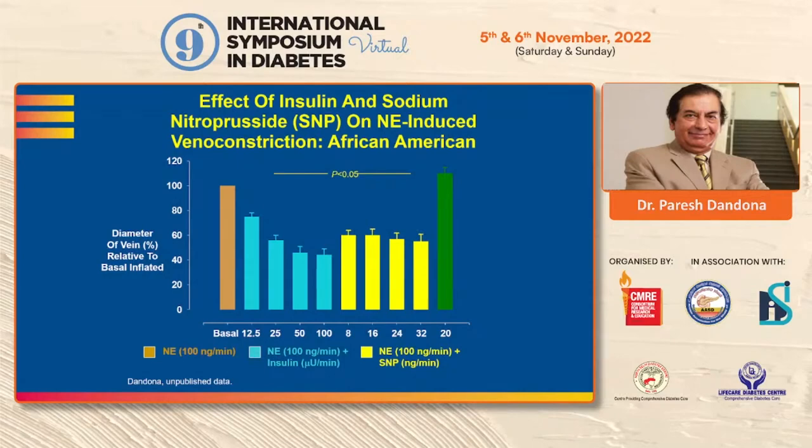In African Americans we also found an impaired response, and as is known, African Americans tend to have more insulin resistance than the white population in the United States.